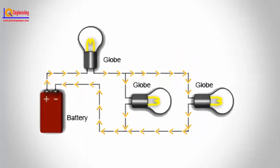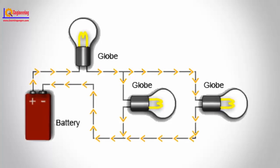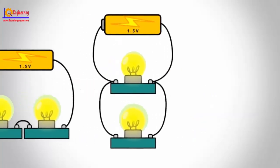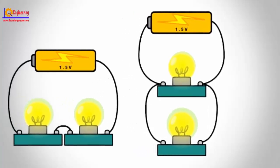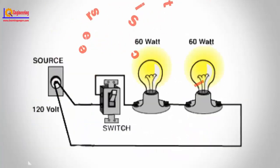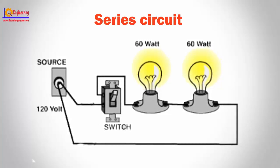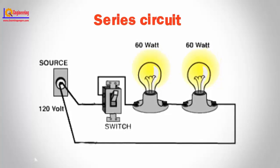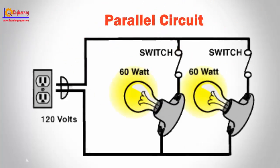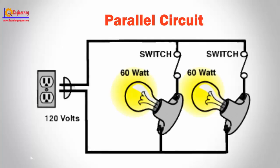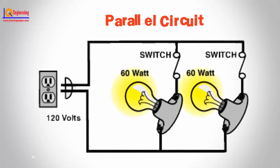Components of an electrical circuit or electronic circuit can be connected in many different ways. The two simplest of these are called series and parallel and occur frequently. Components connected in series are connected along a single path, so the same current flows through all of the components.